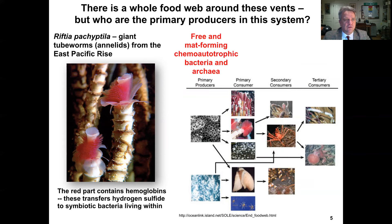There's a whole food web around these vents. Given that there are essentially no photosynthetic organisms, it raises the interesting question of who are the primary producers in this ecosystem. Often associated with these deep sea hydrothermal vents are giant tube worms — they're annelids, phylogenetically in the same clade as the common earthworm. These tube worms have fan-like red structures containing hemoglobins, which transfer hydrogen sulfide to symbiotic bacteria living within the animals. Chemoautotrophic bacteria and archaea essentially fill the role of primary producers.